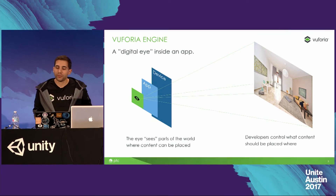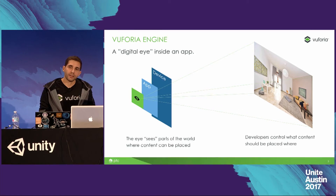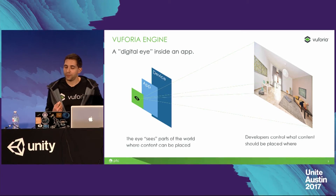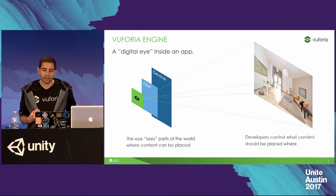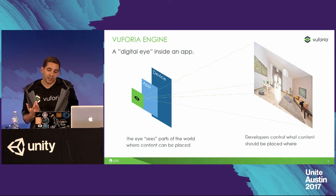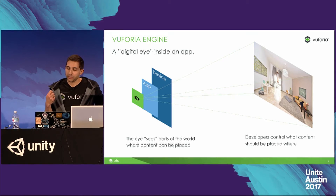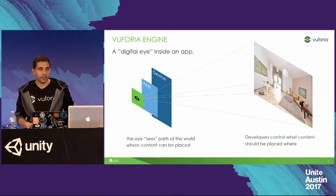Vuforia provides advanced computer vision, which allows us to have a deep understanding of objects, environments, and therefore the world around us. And it's this advanced computer vision that allows for virtual content to augment objects and environments. So much like Neo can see the source code of the Matrix to manipulate it, Vuforia's engine can see the world for you, allowing you to manipulate the virtual content.